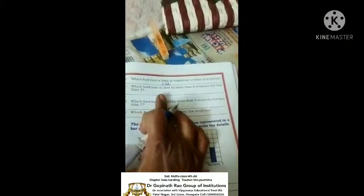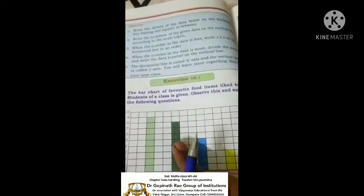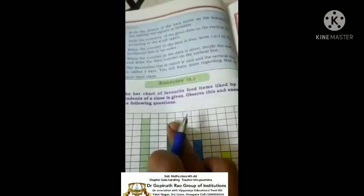Then, what is the next question? Which food item is liked by more than 6 students but less than 8? More than 6, this is final. 1, 2, 3, 4, 5, 6, 7, 8.